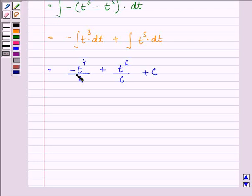on substituting the value of cos x in place of t, we have minus cos raised to the power 4x divided by 4 plus cos raised to the power 6x divided by 6 plus c.